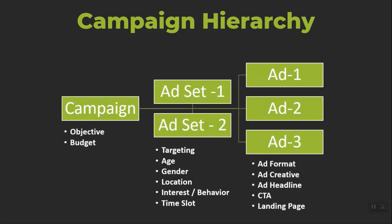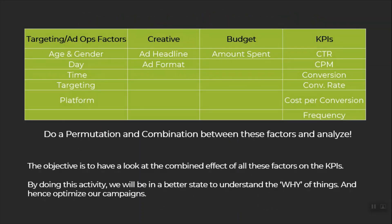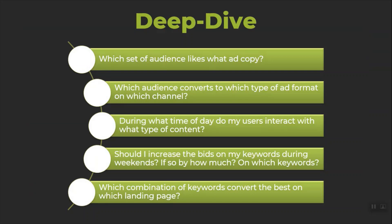A hierarchy snapshot looks something like this. The objective of doing data analysis on a granular level is to do permutation and combination between each of these and find relationships between them — like how strongly does the ad creative influence a particular set of audience. When we do a deep dive, we get answers to questions like: which set of audience likes what ad copies, which audience converts to which type of ad format and on which channel, during what time of day do users interact with what type of content, should I increase the bids on my keywords during weekends, by how much and on which keywords, and which combination of keywords converts the best and on which landing page.